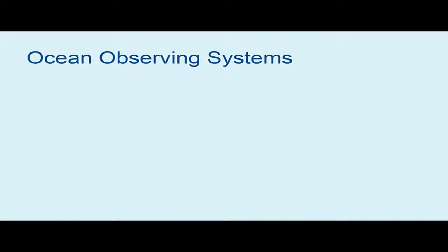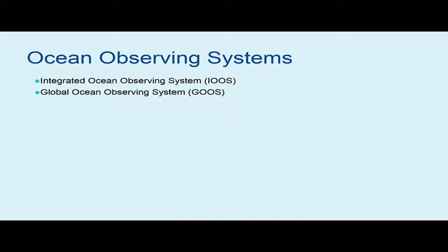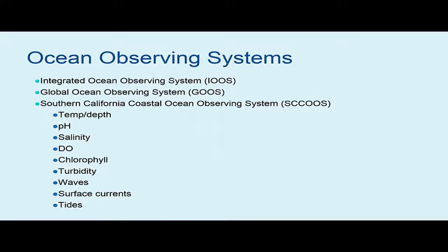The ocean observing system monitors changing conditions in the ocean through a series of sensors placed on buoys, gliders, and other platforms. Here are only a few ocean observing systems currently in place: the Integrated Ocean Observing System, the Global Ocean Observing System, and the Southern California Coastal Ocean Observing System.